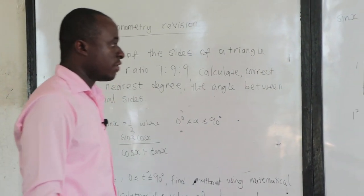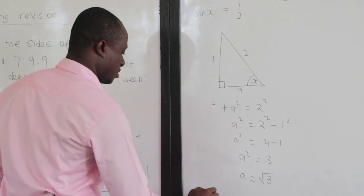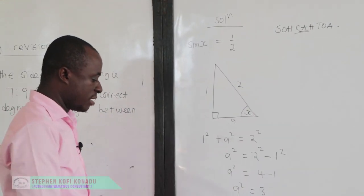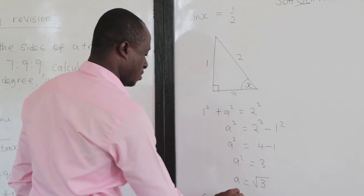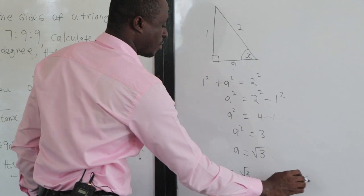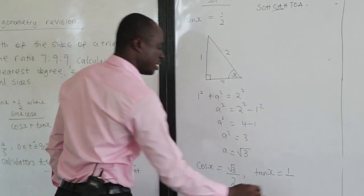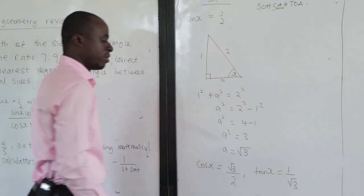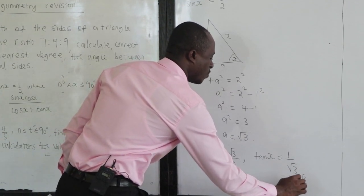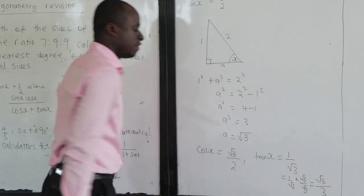From the diagram, cos x — remember CAH, adjacent over hypotenuse — the adjacent is root 3 and the hypotenuse is 2, so cos x equals root 3 over 2. For tan x — opposite over adjacent — the opposite is 1 and the adjacent is root 3, giving tan x equals 1 over root 3. We rationalize: 1 over root 3 times root 3 over root 3 gives root 3 over 3. So tan x equals root 3 over 3.